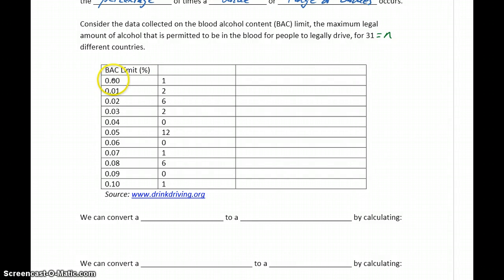In the table below, we have the BAC limit ranging from 0 to 0.1. And this first column is giving us the frequency for each of these values, meaning there was one country out of the 31 that had a BAC limit of 0, meaning you can't have any alcohol in your body. There were 12 countries that had a BAC limit of 0.05, which is what we have in the United States, and some other values that didn't occur at all. Wherever we see a zero, that means none of these 31 countries had that BAC limit.